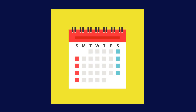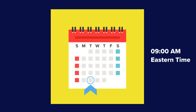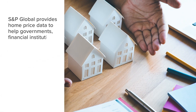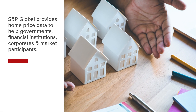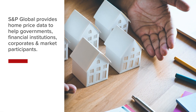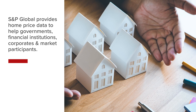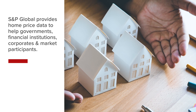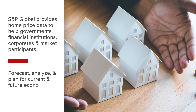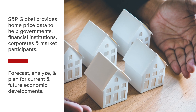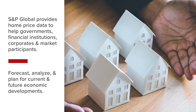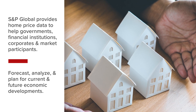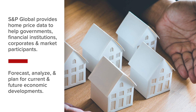S&P Global releases the data on the last Tuesday of each month at 9 a.m. Eastern Time. S&P Global provides home price data to help governments, financial institutions, corporates, and market participants forecast, analyze, and plan for current and future economic developments.